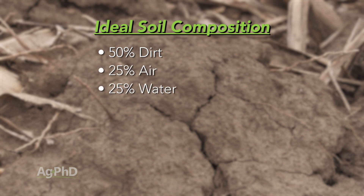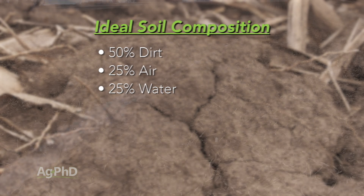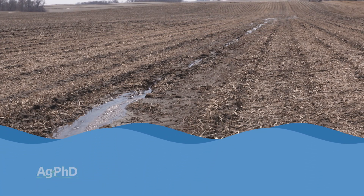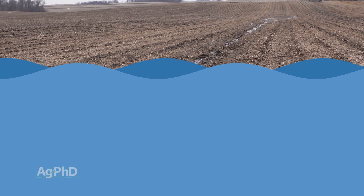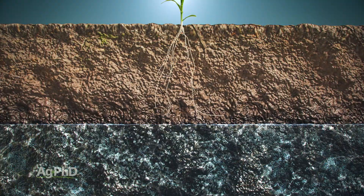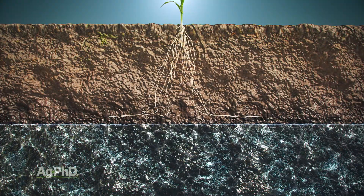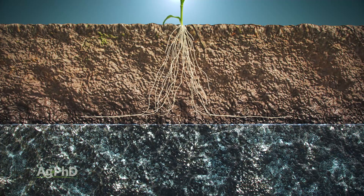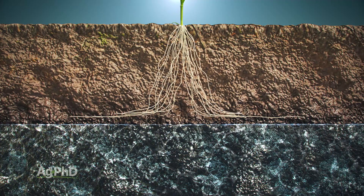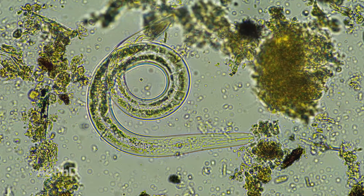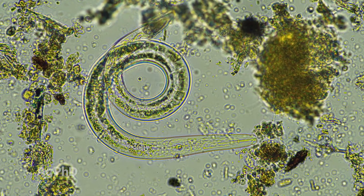The problem is if the water table gets high, all of a sudden you're at 50% dirt and 50% water with no air, which means that no roots are going to be able to grow, and no aerobic microbes or beneficial microbes are going to be able to live — so that's a real problem.